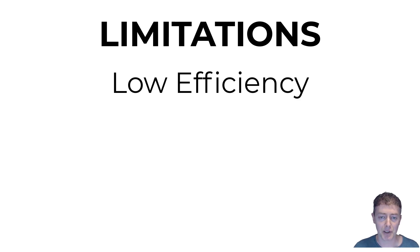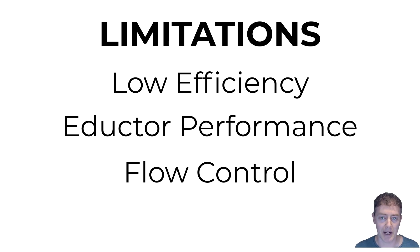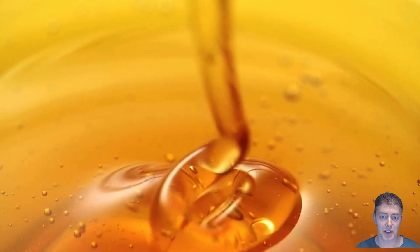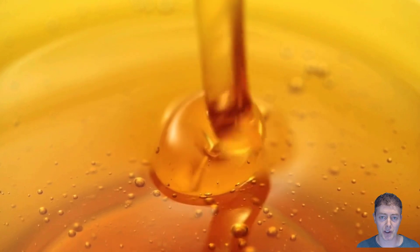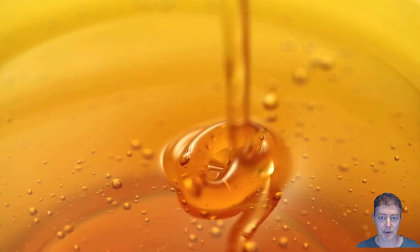However, adductors do have some limitations. They have quite a low efficiency compared to mechanical pumps, because we're converting energy from pressure to velocity and then back from velocity to pressure again — these conversions decrease overall efficiency. The performance of an adductor is directly dependent on the pressure and flow rate of the motive fluid; if there's a pressure drop or low flow rate, the adductor will no longer work. Controlling the flow through an adductor is also quite difficult, especially if the motive fluid flow is not stable. High viscosity fluids — those with a high resistance to flow — are also not best suited for an adductor, because the suction lift generated may not be strong enough to overcome their resistance to flow.